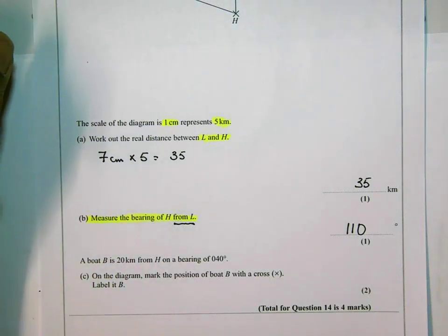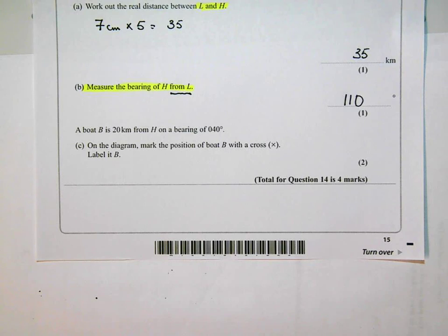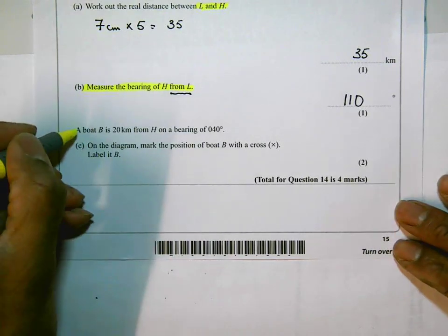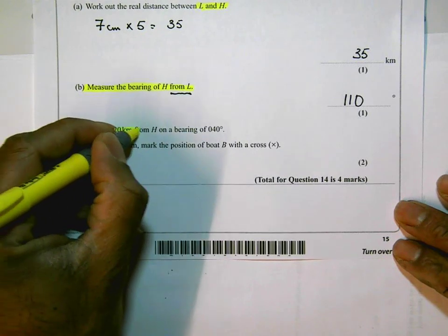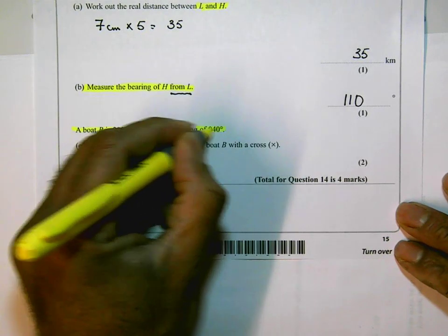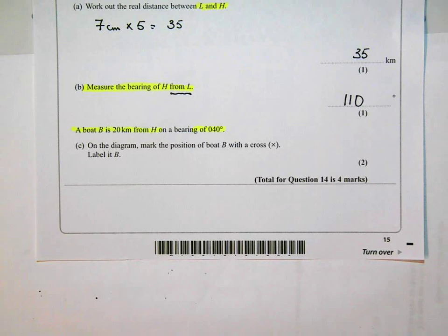Okay, part C. Part C says a boat is 20 kilometers from H on a bearing of 040 or 40 degrees. On the diagram, mark the position of the boat B with a cross. Label it B. So on the diagram they want me to mark the position of the boat B with a cross.